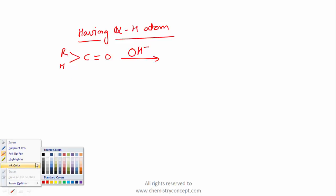Aldol condensation is a reaction of carbonyl compounds having alpha hydrogen atoms. If they don't have alpha hydrogen atoms, they'll undergo Canizarro reaction. If they have alpha hydrogen atoms, they'll undergo aldol condensation when reacted with a base. Let's look at what happens when an aldehyde having an alpha hydrogen atom is reacted with a base.